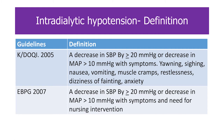Two more popular definitions: one is the K-DOQI guidelines 2005 — a decrease in systolic blood pressure by 20 mmHg or more, or decrease in mean arterial pressure more than 10 mmHg, with symptoms. And the KDIGO guidelines in 2007 have the same numbers in terms of symptoms, but they added the requirement of interventions.